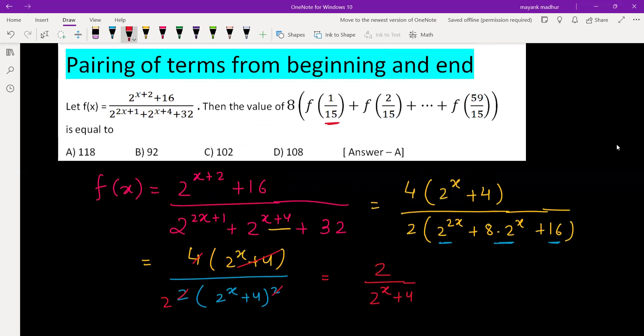Now what do we need? We need f(1/15), f(2/15), and so on till f(59/15). In this type of question, what do we do? We pair the terms from beginning and end, like first and last, second and second last, and so on.